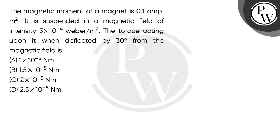Let's read the question. The magnetic moment of a magnet is 0.1 ampere meter square. It is suspended in a magnetic field of intensity 3×10⁻⁴ weber per meter square. The torque acting upon it when deflected by 30 degrees from the magnetic field is.